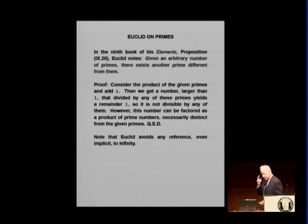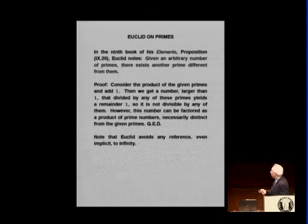Now, about Euclid. In Euclid, we find no reference to infinity. Now, it's a popular thing to say that Euclid proved that the sequence of prime numbers is infinite. It does not say so. It says the following: that given an arbitrary number of primes, there is another prime different from them. And the proof is very classical and beautiful, very short. But Euclid avoids references to infinity. So, the next...